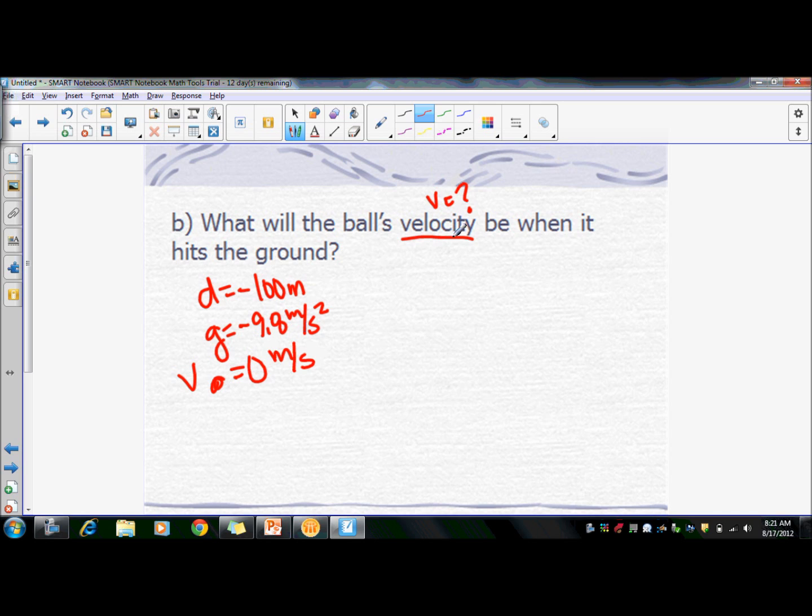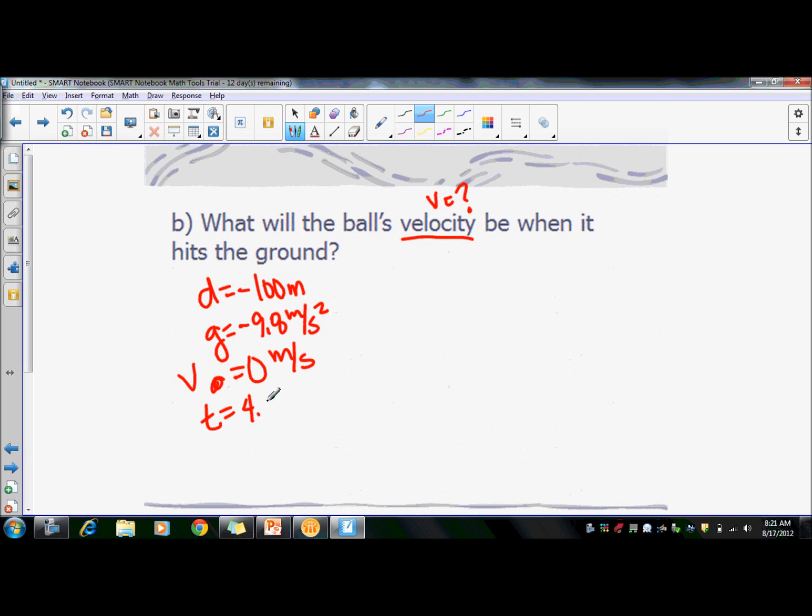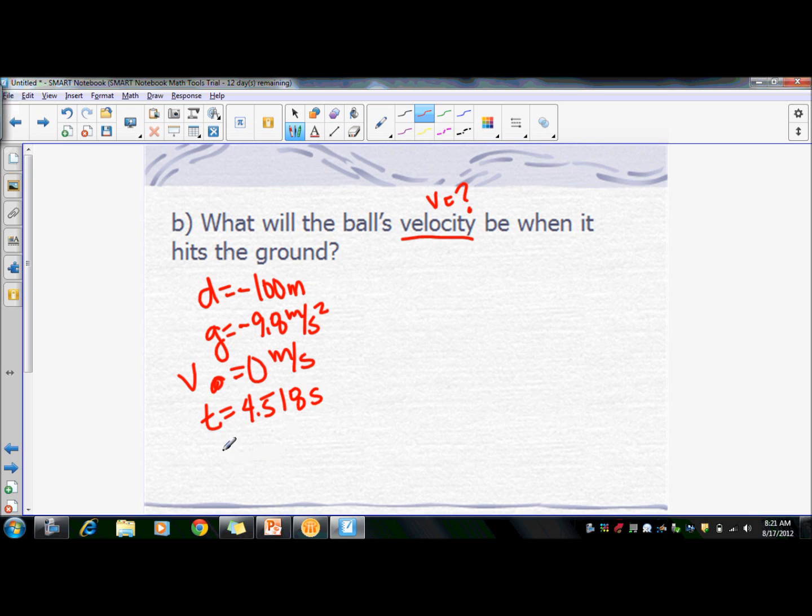And what we're looking for now is the velocity. Now, we solved for T, so we could use that one as well, which is 4.518. And then now we're looking for V.